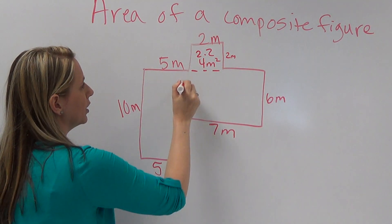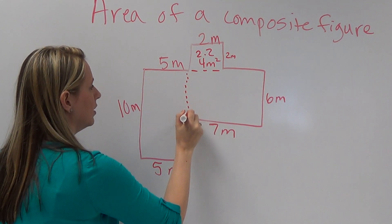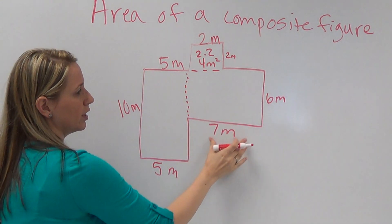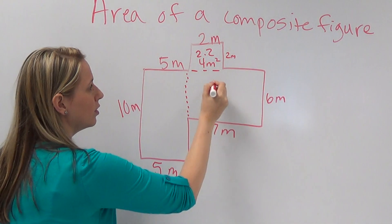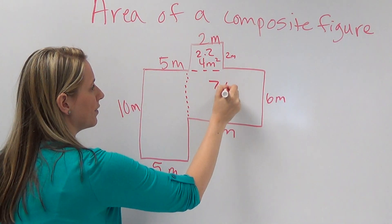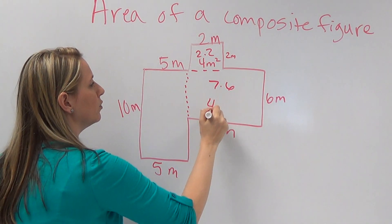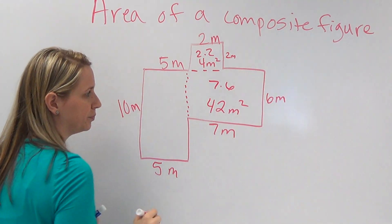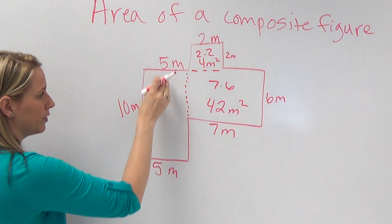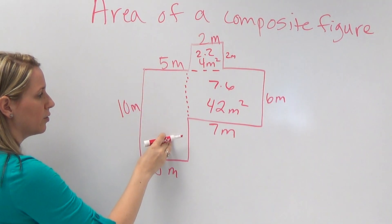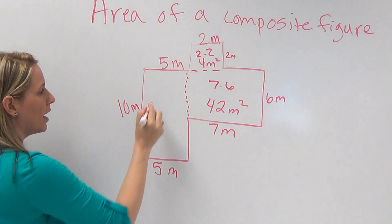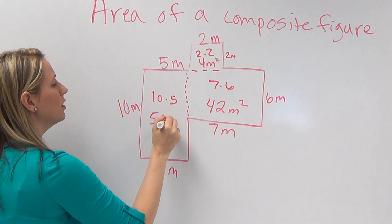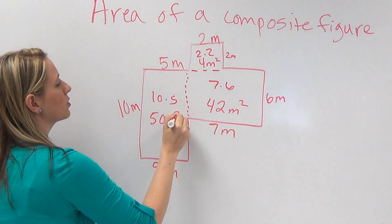Then we can cut this little section off — this will be a rectangle. You've got your length and your width, so seven times six is going to give you 42 meters squared for that one. Then we've got another rectangle: ten times five is going to give you 50 meters squared.